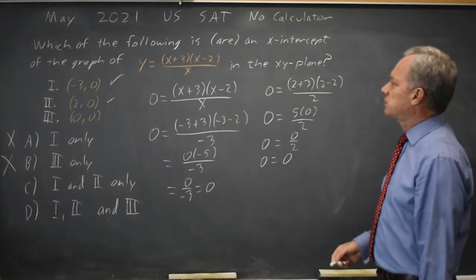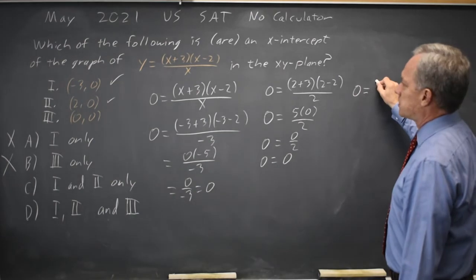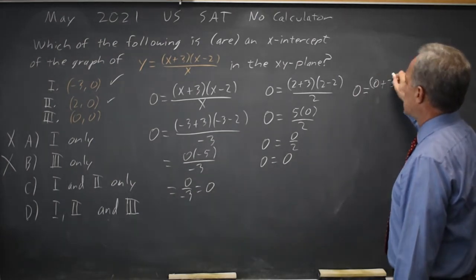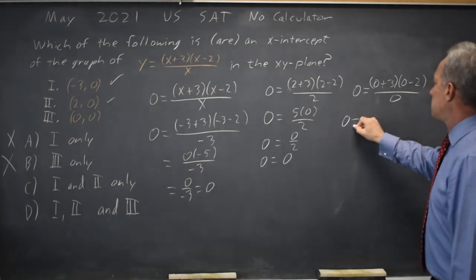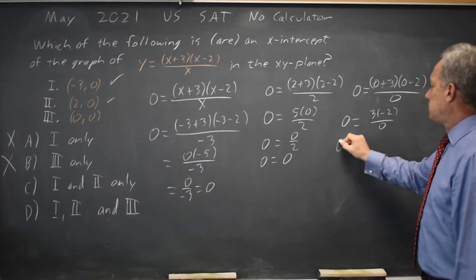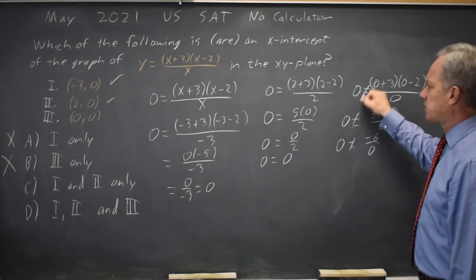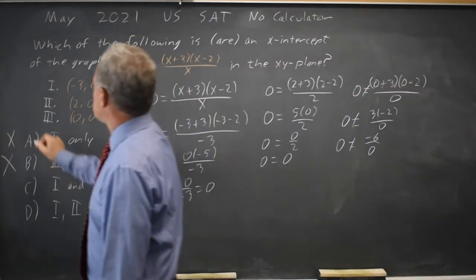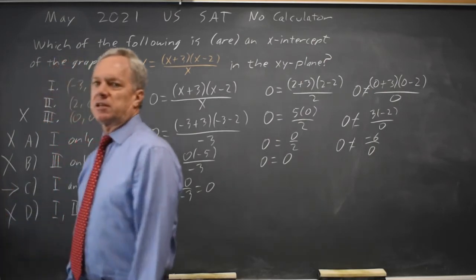Let's try x equals 0. That gives me the y-value of 0 equals (0+3)(0-2)/0. 0 equals 3 times negative 2 over 0, which is 0 equals negative 6 over 0. But division by 0 is not defined. That's not true. Choice 3 does not work, which rules out D. The correct answer is C.